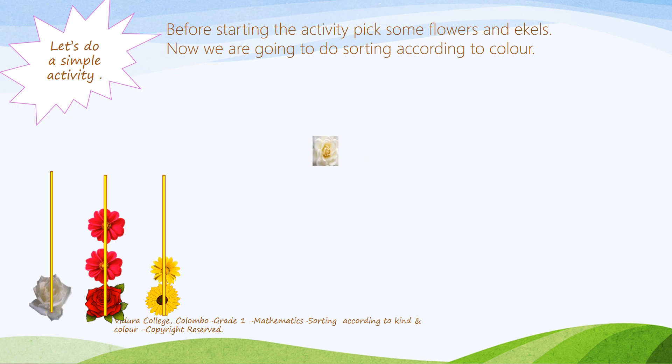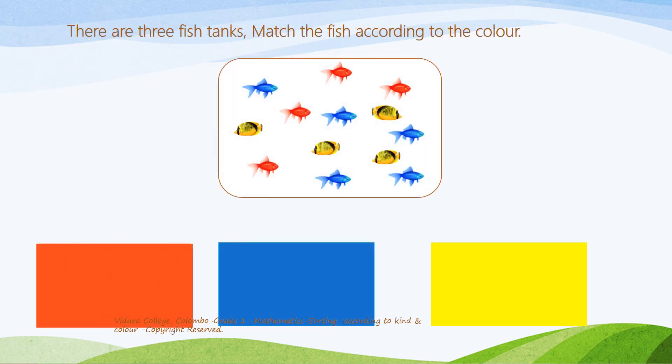Finally, we have a nice flower stick like this. This is our last activity. Here we have so many fish in different colors, so you need to sort these fish according to their color.